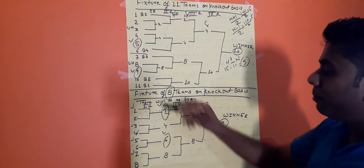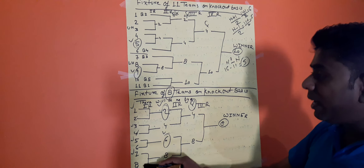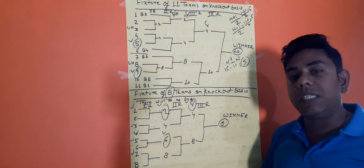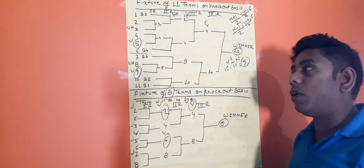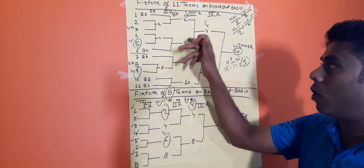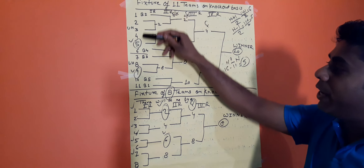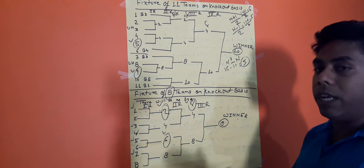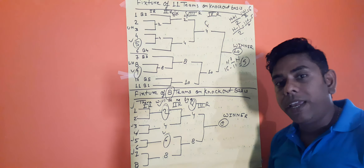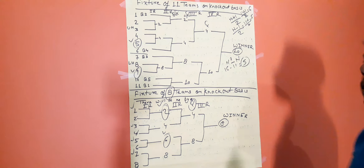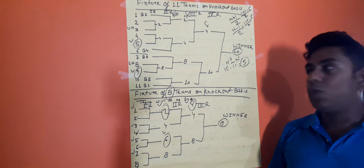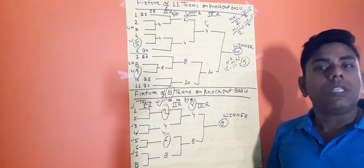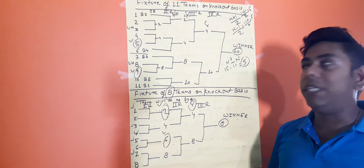If the number of teams participating on the knockout basis is odd, we need to make this fixture and give byes properly to execute the matches smoothly. Students understood? Thank you, stay at your home and be safe.